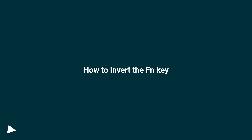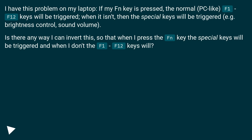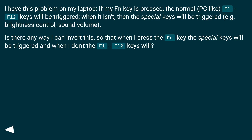How to invert the FN key. I have this problem on my laptop: if my FN key is pressed, the normal PC-like F1 to F12 keys will be triggered; when it isn't, the special keys will be triggered — for example, brightness control and sound volume. Is there any way I can invert this, so that when I press the FN key the special keys will be triggered, and when I don't, the F1 to F12 keys will?